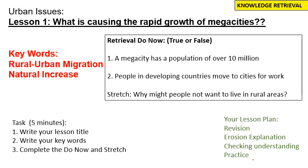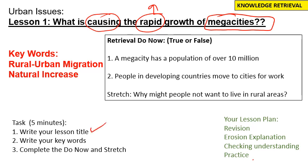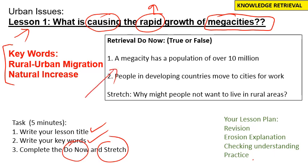So let's have a look at the focus today. We're looking at what is causing the rapid growth of megacities, and we need to confirm what a megacity actually is. I'd like you to take your notepad or exercise book and write your lesson title: 'What is causing the rapid growth of megacities?' Write your two key words — rural urban migration and natural increase — and complete the do now and stretch questions, which test what knowledge you already have about megacity growth.